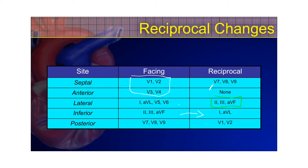Posterior wall MIs are typically identified first by seeing the reciprocal changes in V1 or V2, and sometimes even V3 and V4. Then you would do a posterior 12-lead if it was isolated to a posterior wall, and get your V7, V8, V9, and ST elevation there. That is a pretty good indication that you have a posterior wall MI — if you have depression in the anteroseptal leads and elevation in your posterior leads, that's a pretty solid case for a posterior wall MI.